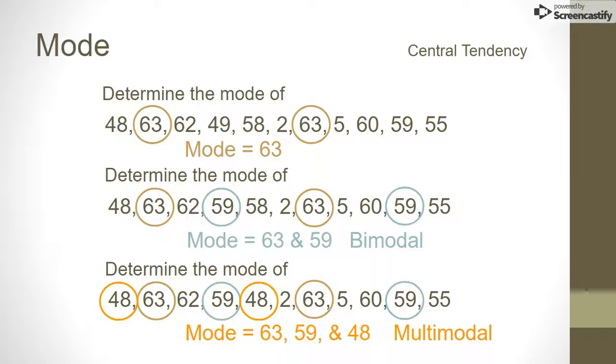The mode is most useful as a measurement of central tendency when a very large data set is used. In smaller sets of numbers, like the ones shown, the probability of repeated measurements is less, and the likelihood of finding a single mode that truly represents the central tendency of the data is lower.